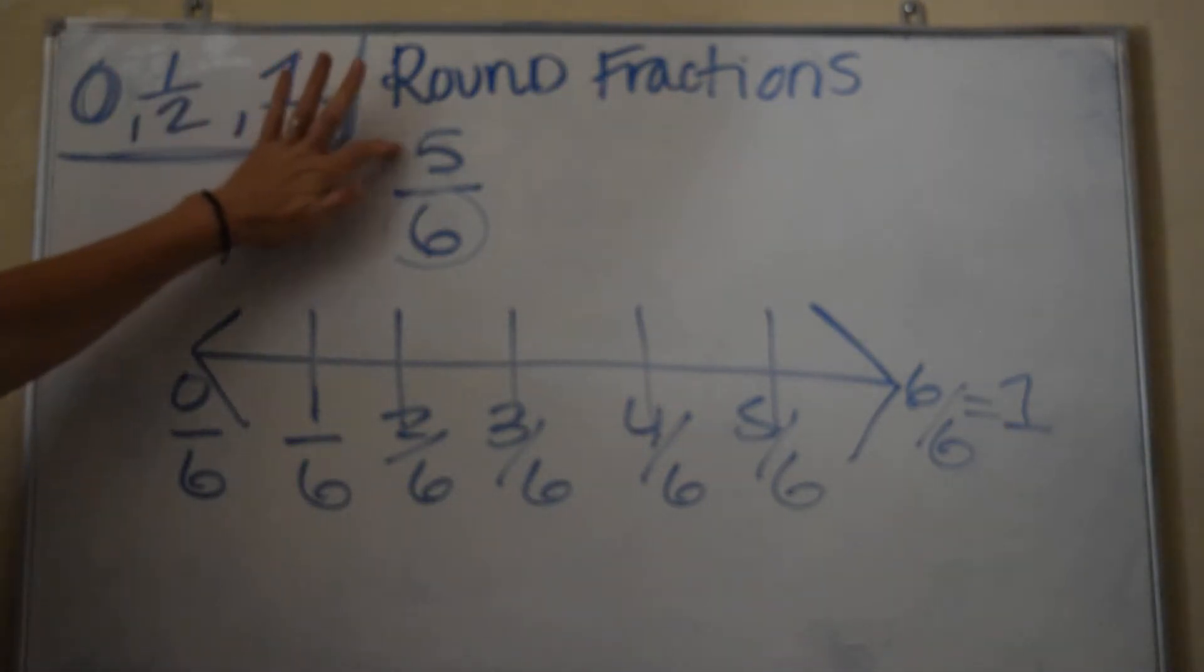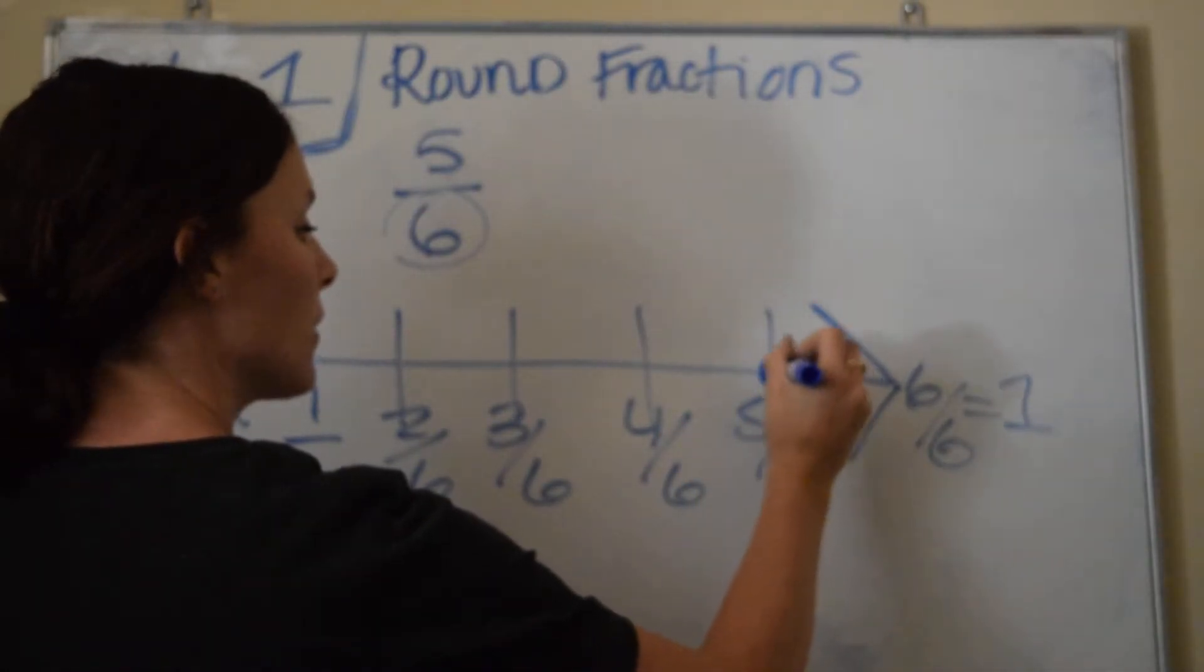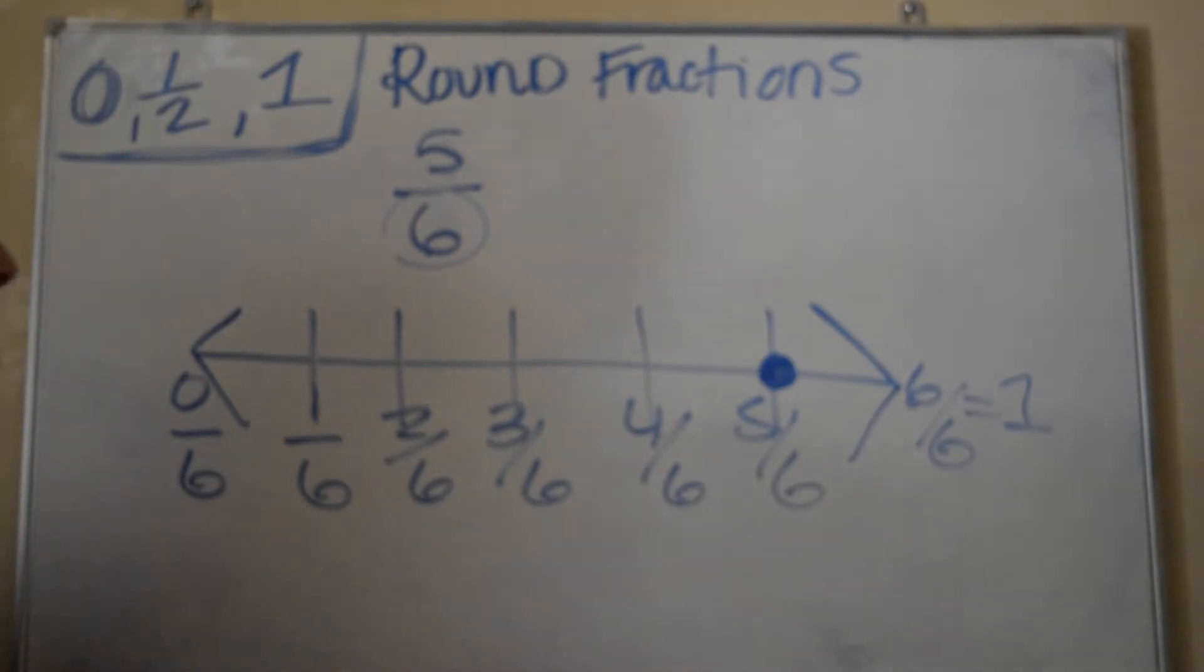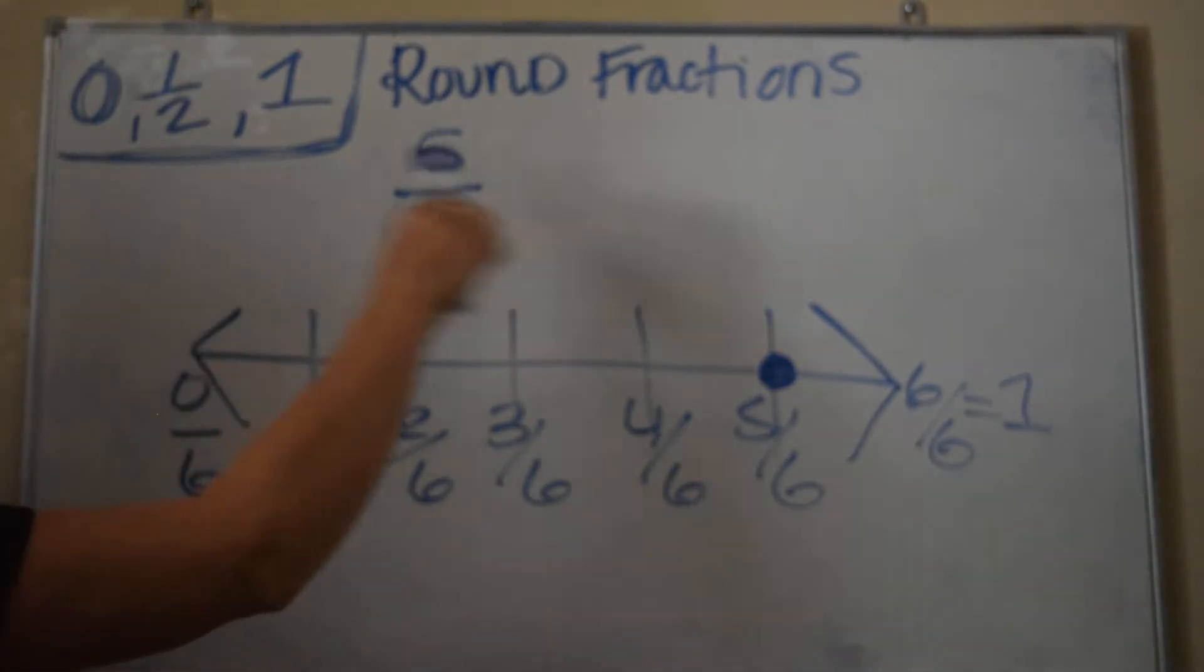Where is 5 out of 6? You need to label it. 5 out of 6 is right here. And we want to round it. Is it closer to a whole, is it closer to 0, or closer to a half? Well, where's half?